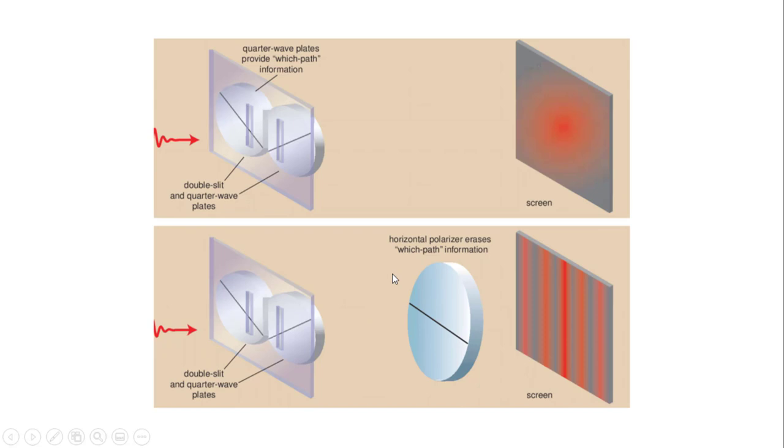We get the interference pattern back. So it essentially says if we know which one it went through, there's no interference, no constructive interference. If we don't know, if we erase that information, then we get the interference again.